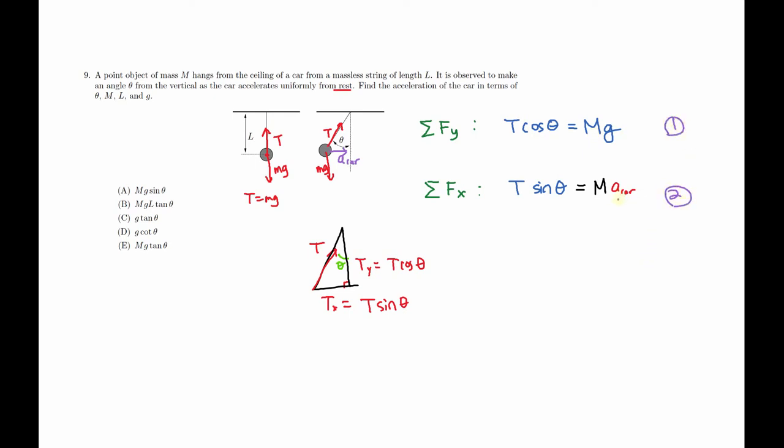To find a_car, all I have to do is divide equation 2 from equation 1. So I have 2 over 1. We have T sine theta equal M, and then the acceleration of the car.